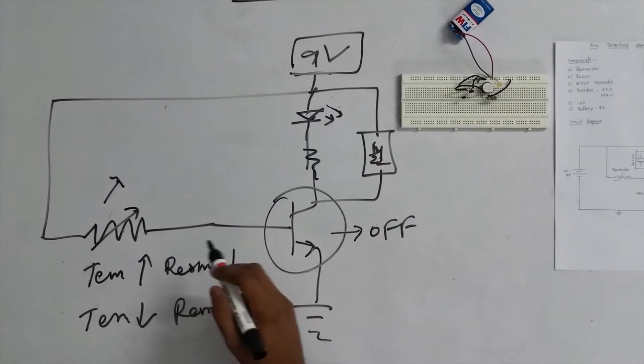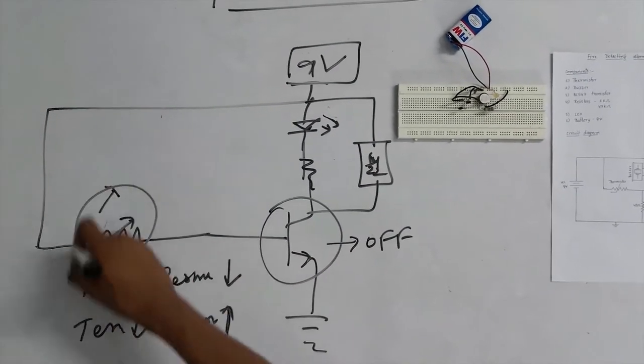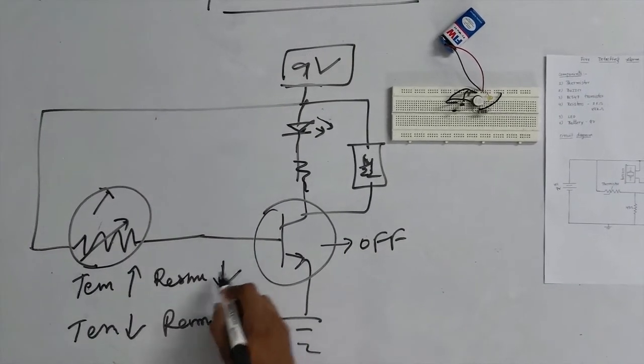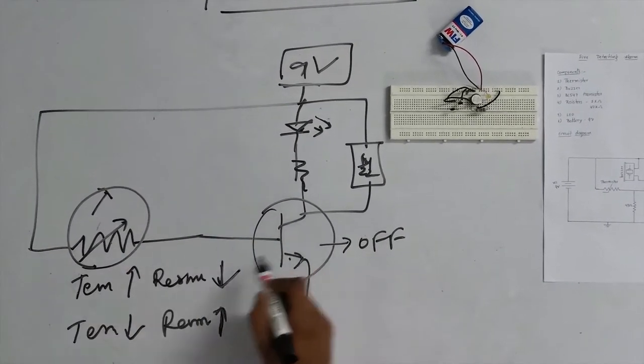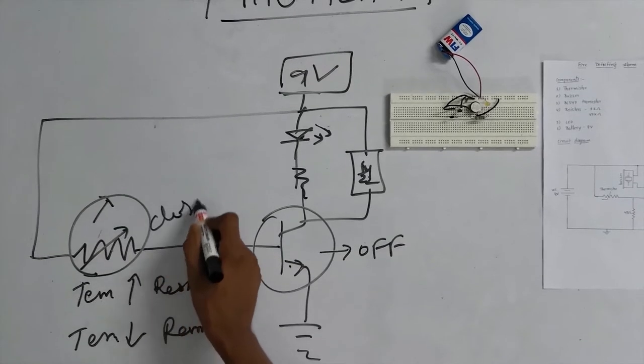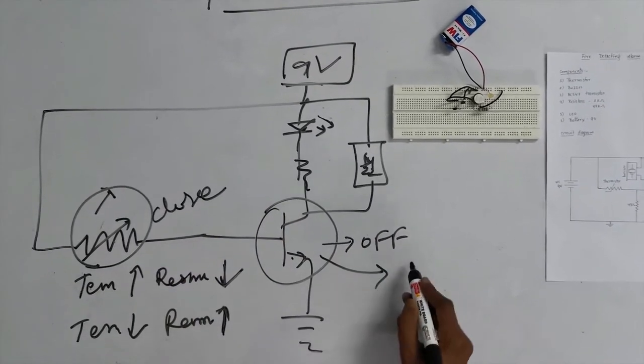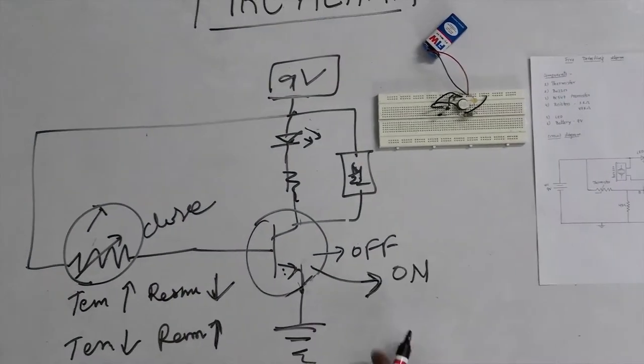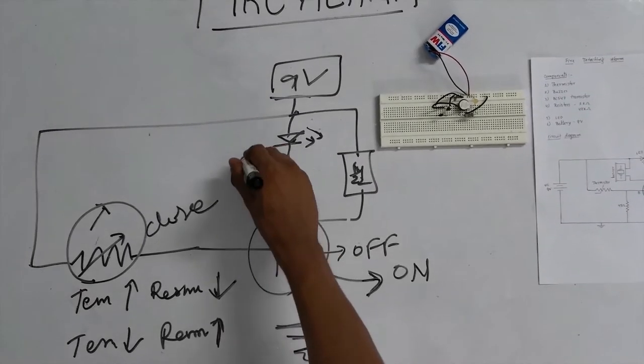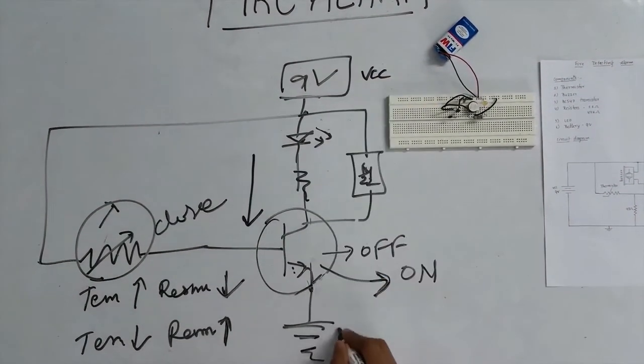If I increase the temperature at this thermistor, the resistance will decrease and the circuit to the transistor will be closed. So the transistor status will be on. When the transistor is on, a short circuit path is created from the resistor to ground.